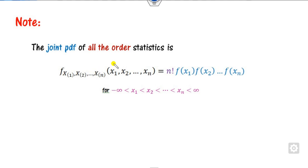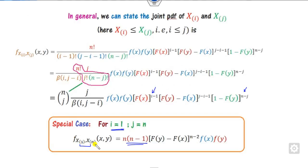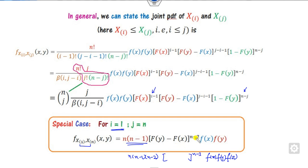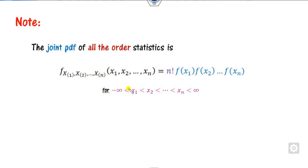For three variables, the formula extends to include f(x), f(y), and f(z) with factors n−2 and n−3. For n variables, the factors continue down to n−n = 0, and the remaining part becomes n factorial, giving the joint density of all n order statistics.